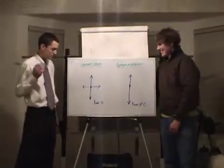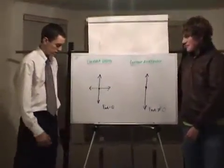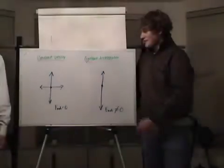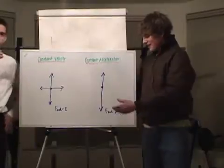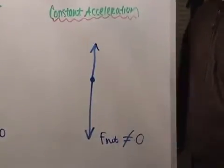If it's constant velocity, the net force will equal zero in the x or y direction. See how they're equal to each other? If it's constant acceleration, the net force will not equal zero, and one end will be longer than the other.